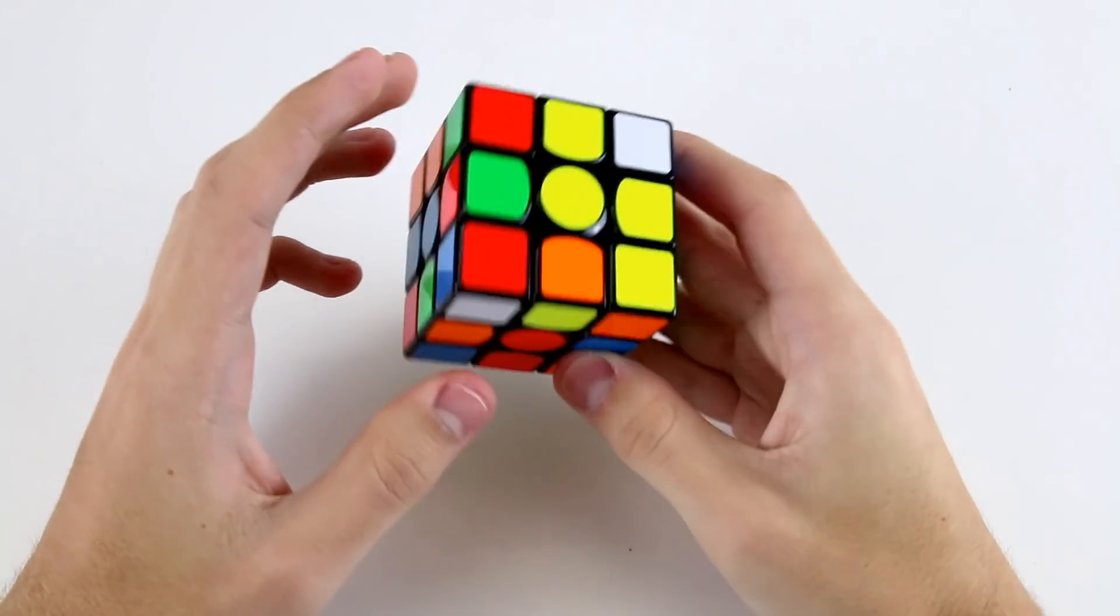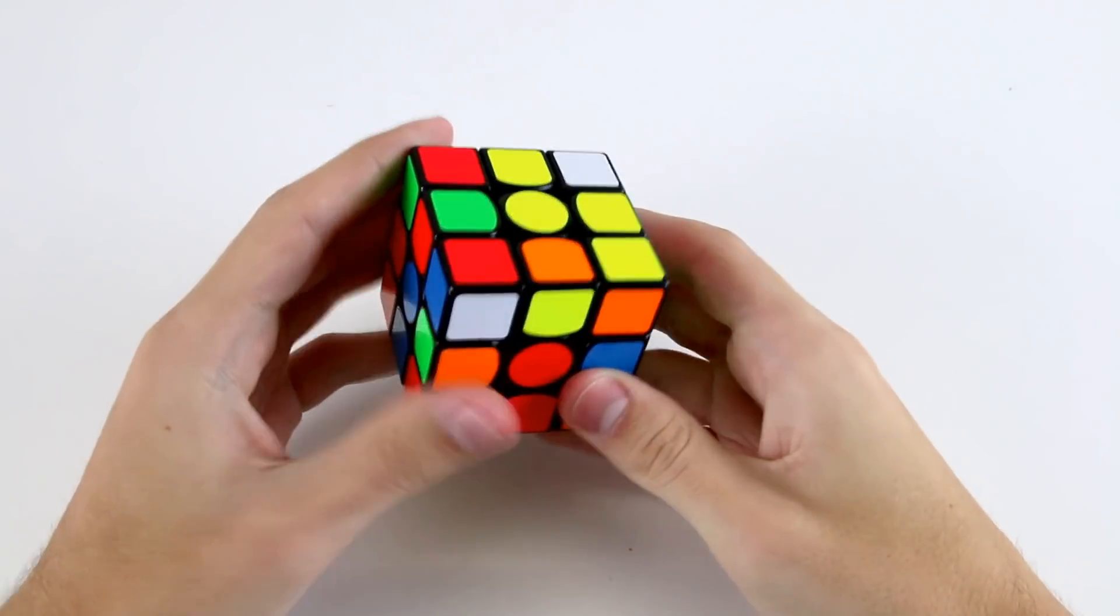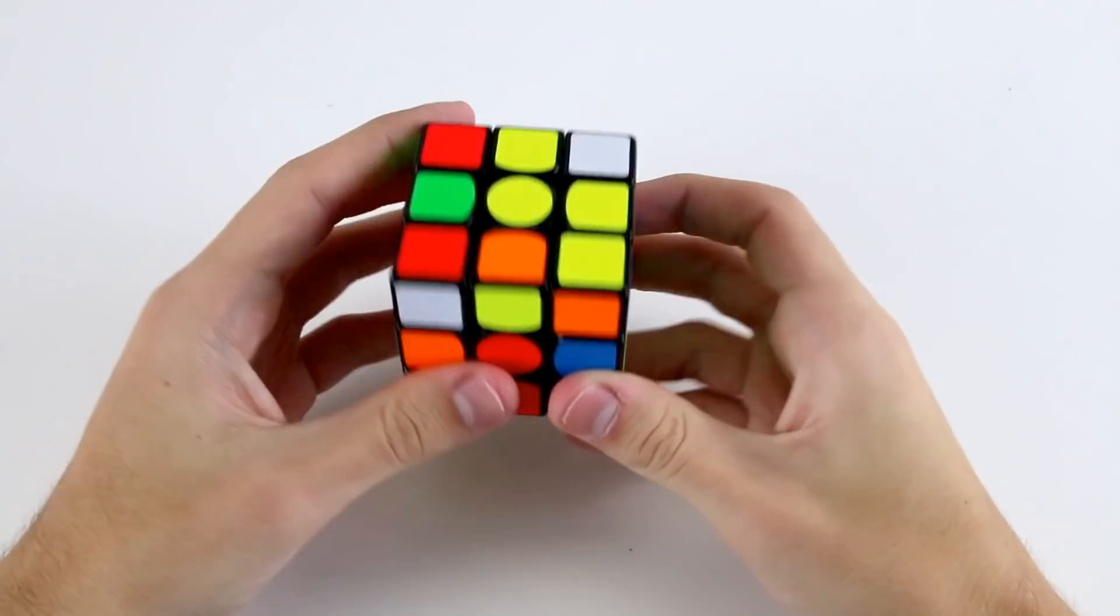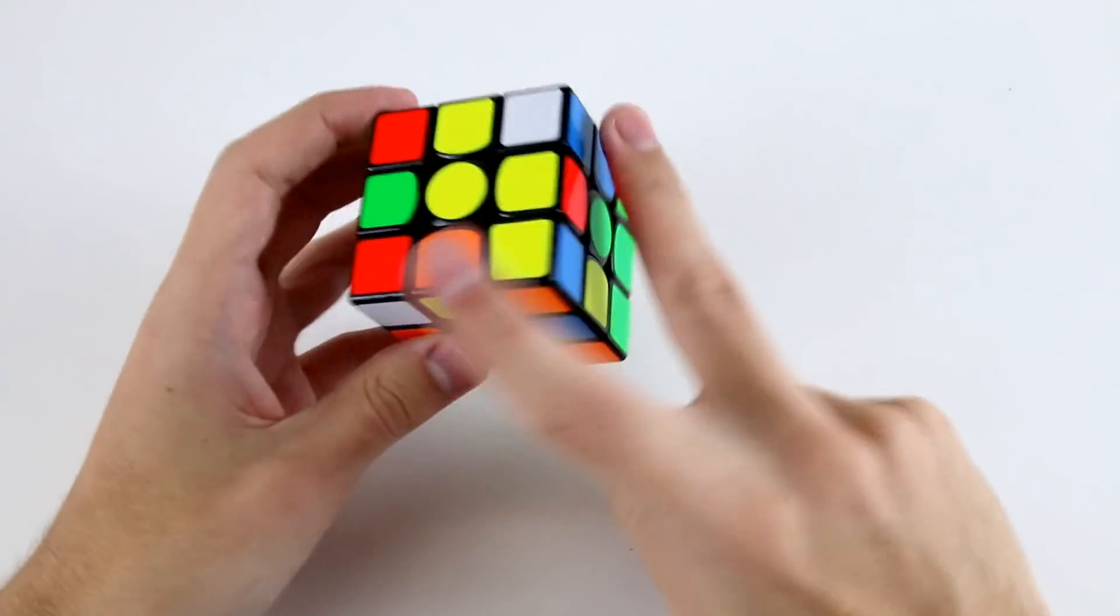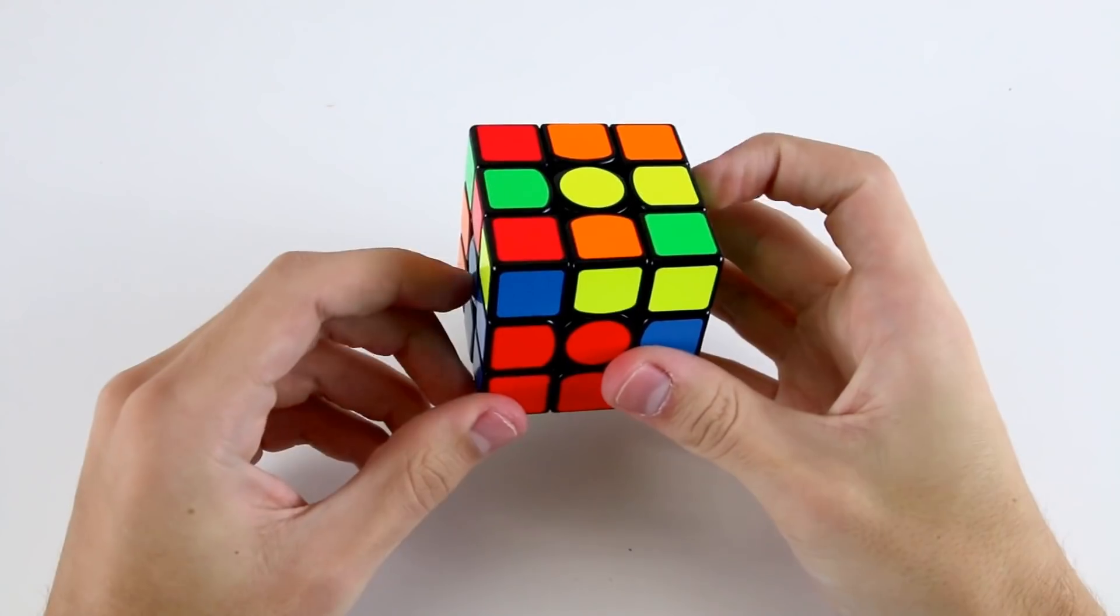The first F2L pair that I see are these two. There's also the possibility of doing this one and this one which would be better because it doesn't require rotation. If I saw this then I would probably do it like that into that slot.